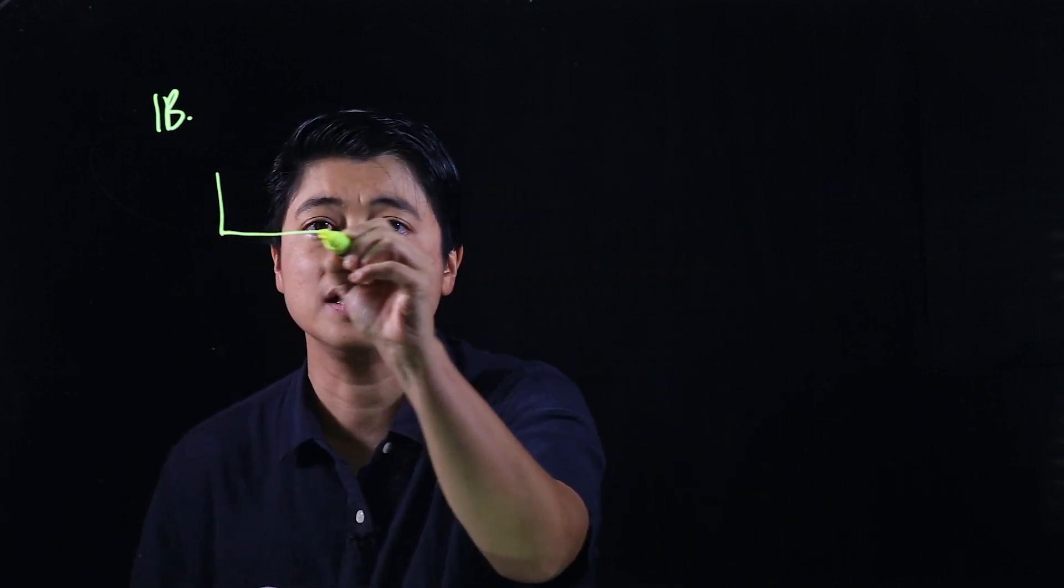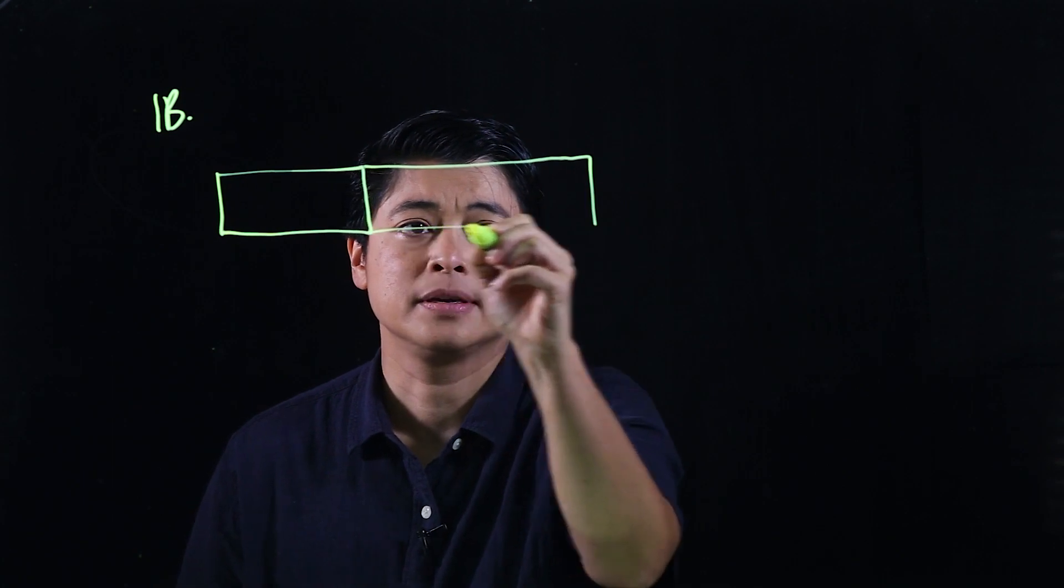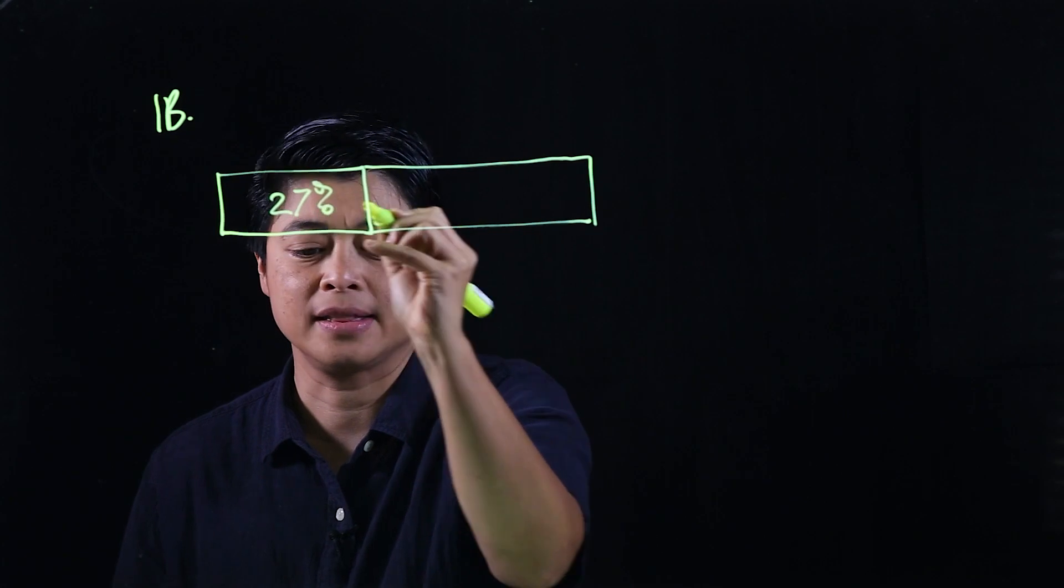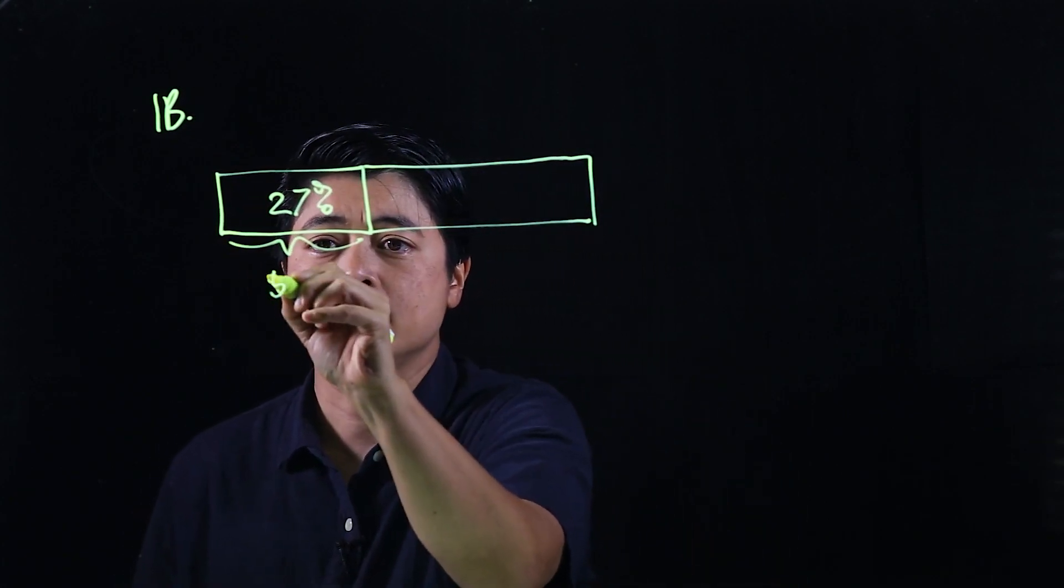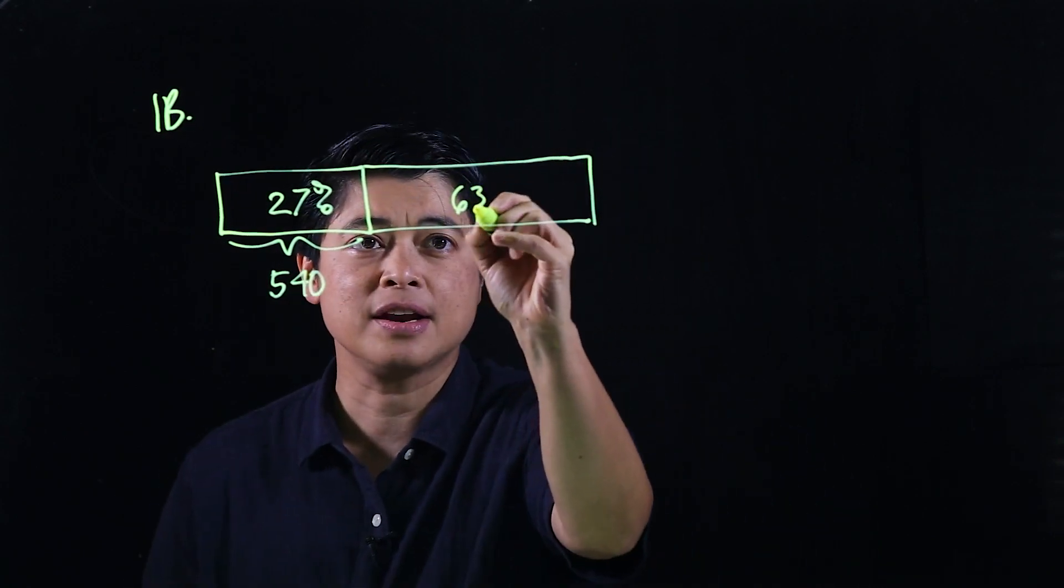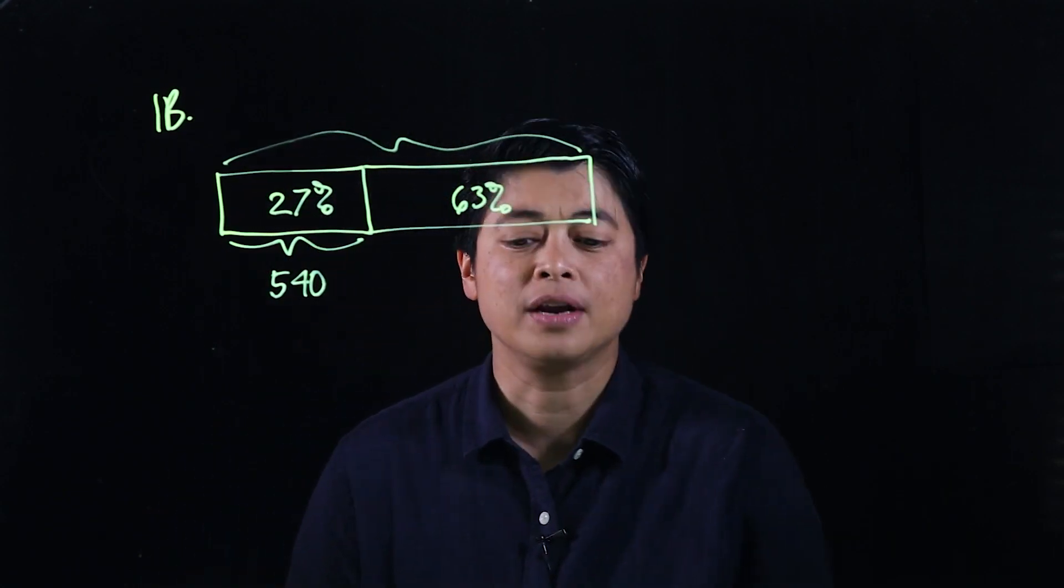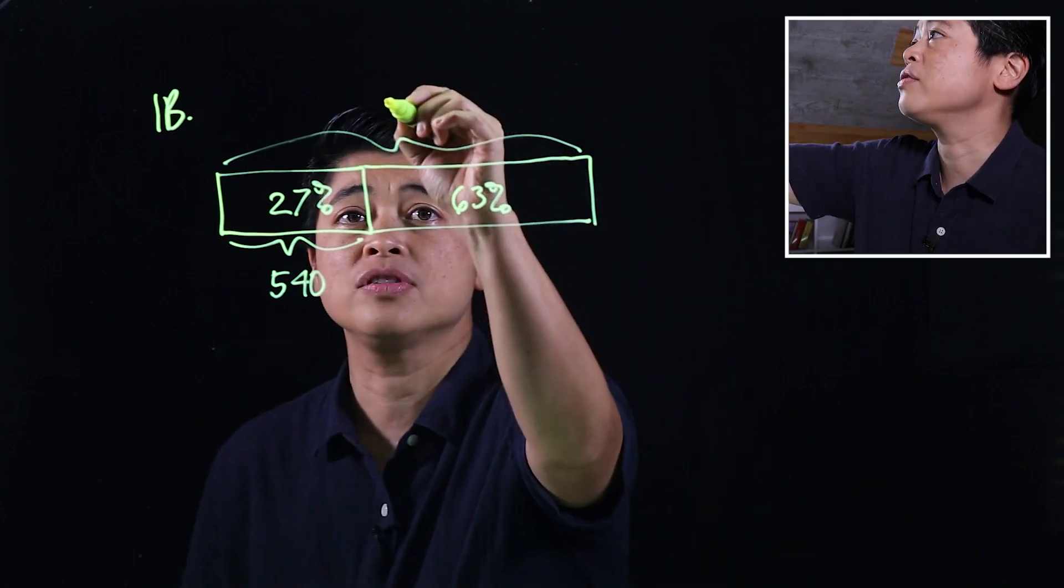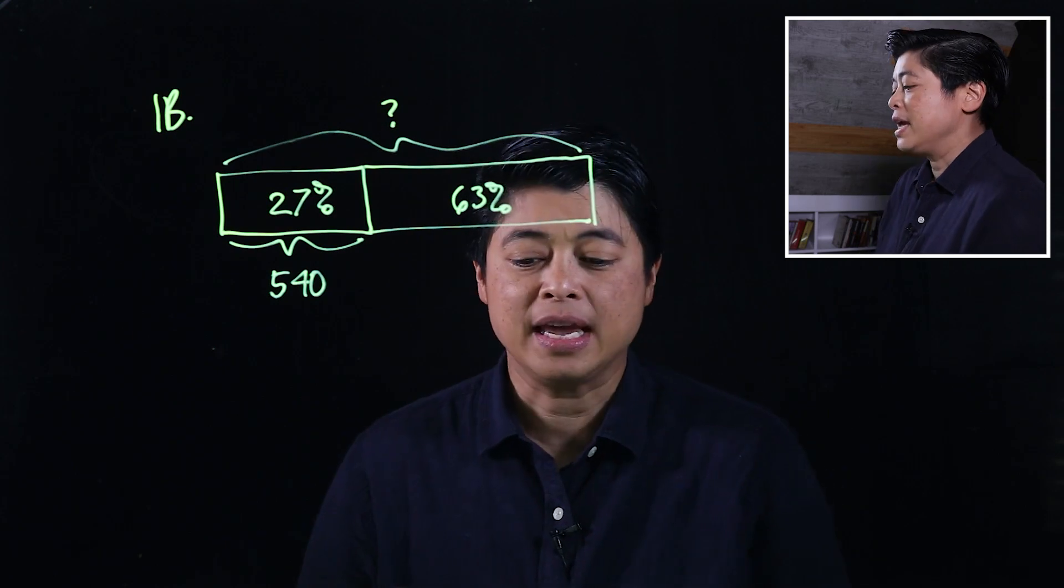Continuing on to problem 1b. The problem says 27% of the pupils in a school is Primary 6. There are 540 Primary 6 pupils. How many pupils are there in the school? The book has a bar model, but their bar model is kind of inconsistent because the percent is on the outside, so I'll put my bar model. This is 27 percent, and this is technically 540. Which means this must be 63 percent because the whole thing is 100 percent. So the question is how many pupils are there, so that's our question mark.